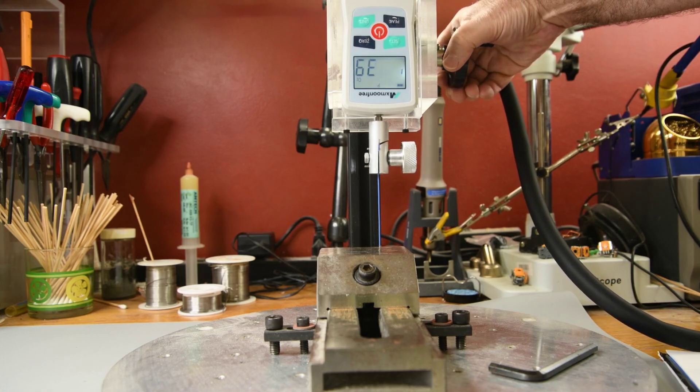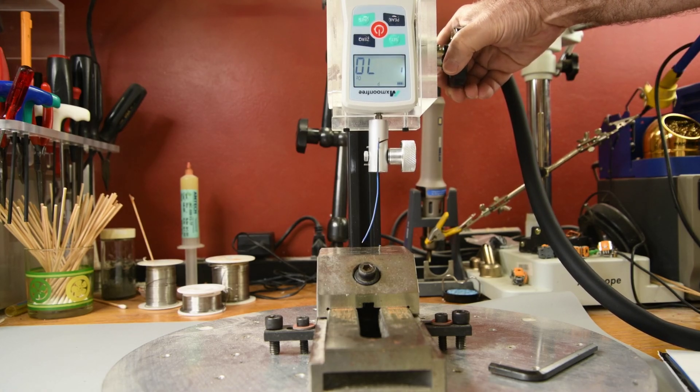Here is the same Clickmate terminal crimped with the PA09 tool. And it made it to 70 ounces.